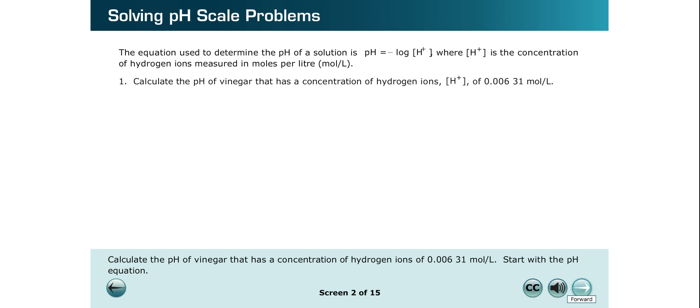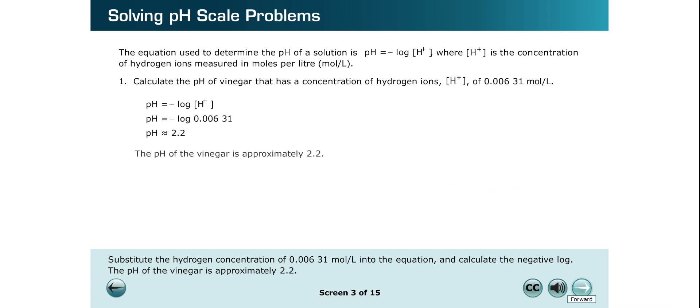Calculate the pH of vinegar that has a concentration of hydrogen ions of 0.00631 moles per liter. Start with the pH equation. Substitute the hydrogen concentration of 0.00631 moles per liter into the equation and calculate the negative log. The pH of the vinegar is approximately 2.2.